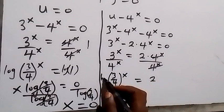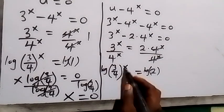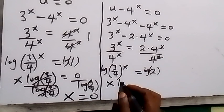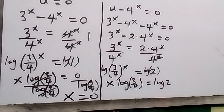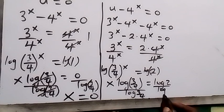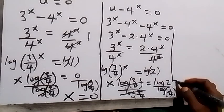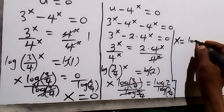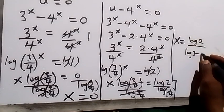Taking the log of both sides and applying the power law: x·log(3/4) equals log 2. Dividing both sides by log(3/4), and applying the law of logarithms to separate the fraction, we get x equals log 2 divided by (log 3 minus log 4).